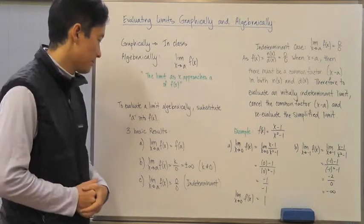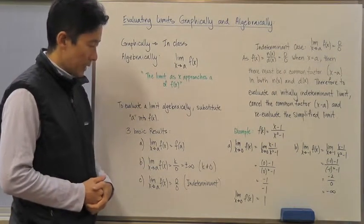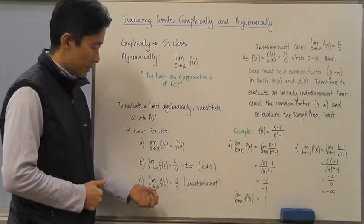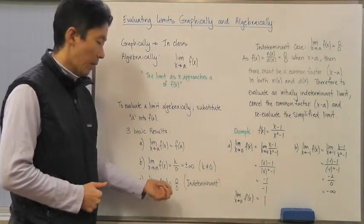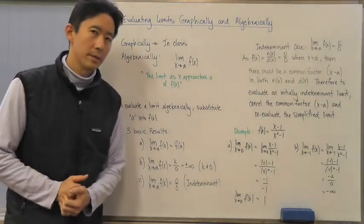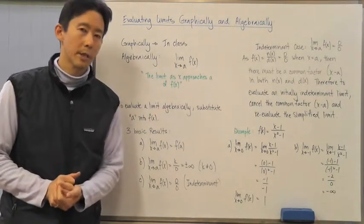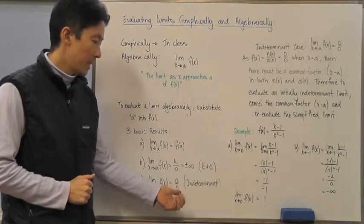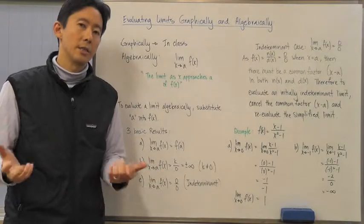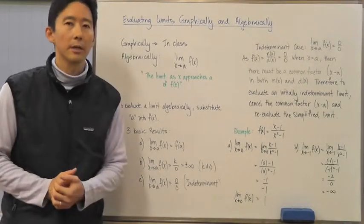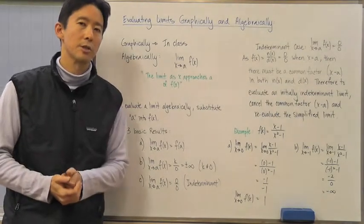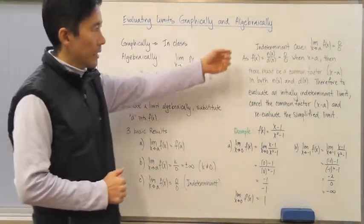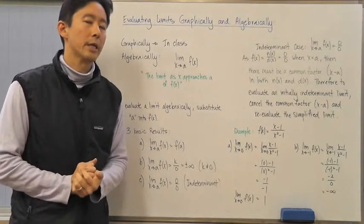The third possible situation is when substituting a for x into f of x gives you zero over zero. This situation is called the indeterminate case. It is not determinable at that point, which is why we call it indeterminate. What we need to do is manipulate the function a little bit so that we can determine the value of the limit.